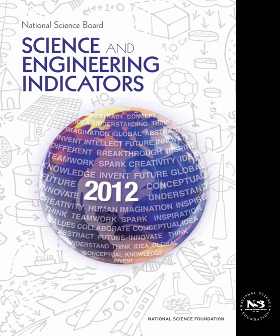The chapter titles are: Elementary and Secondary Education; Higher Education in Science and Engineering; Science and Engineering Labor Force; Research and Development, National Trends and International Linkages; Academic Research and Development; Industry, Technology, and the Global Marketplace; Science and Technology, Public Attitudes and Understanding; State Indicators; and an Appendix Volume. The online version contains detailed data tables keyed to each of the eight chapters listed.